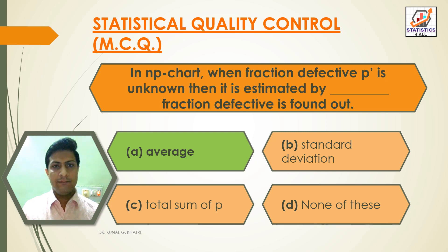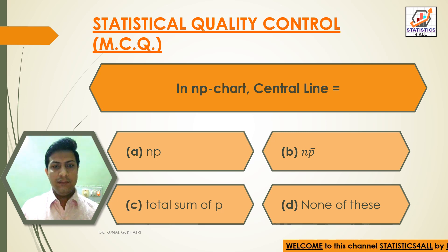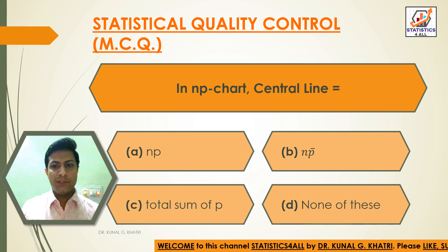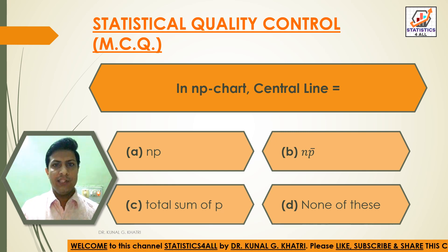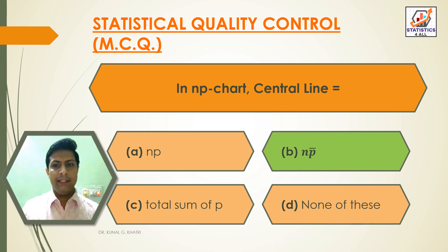Next question: in NP chart, center line is equal to? Option A: NP', Option B: NP bar, Option C: total sum of P', Option D: none of these. Answer: Option B — NP bar. In NP chart, center line is equal to NP bar.